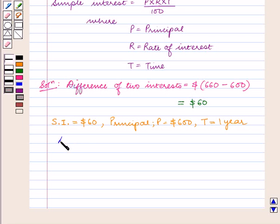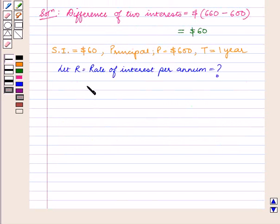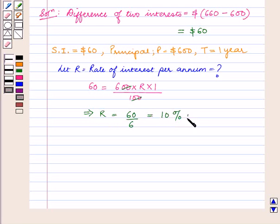Let R be the rate of interest per annum which we have to calculate. For the last period, we have 60 is equal to $600 into R into 1 upon 100. This implies R is equal to 60 upon 6 which is equal to 10% per annum.